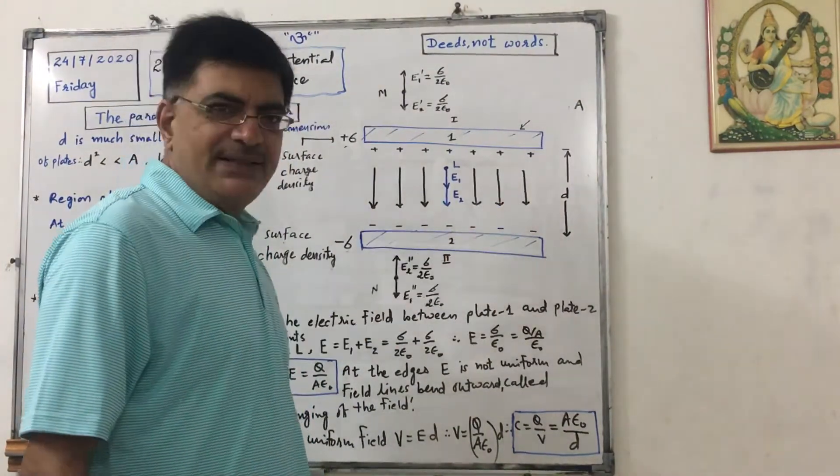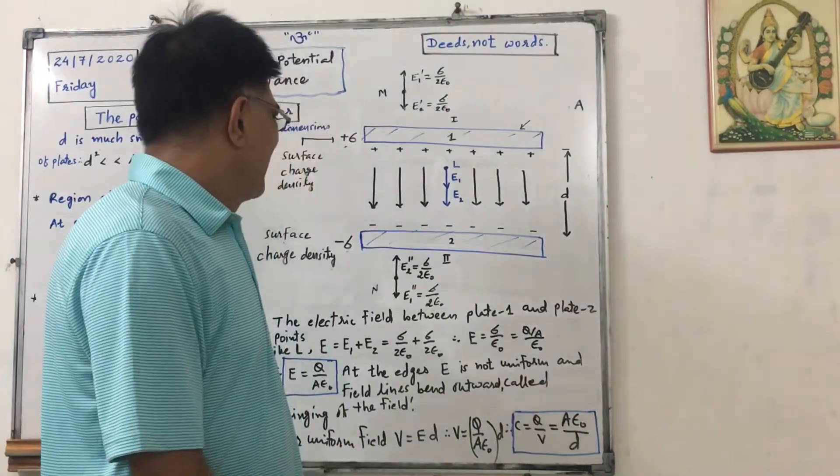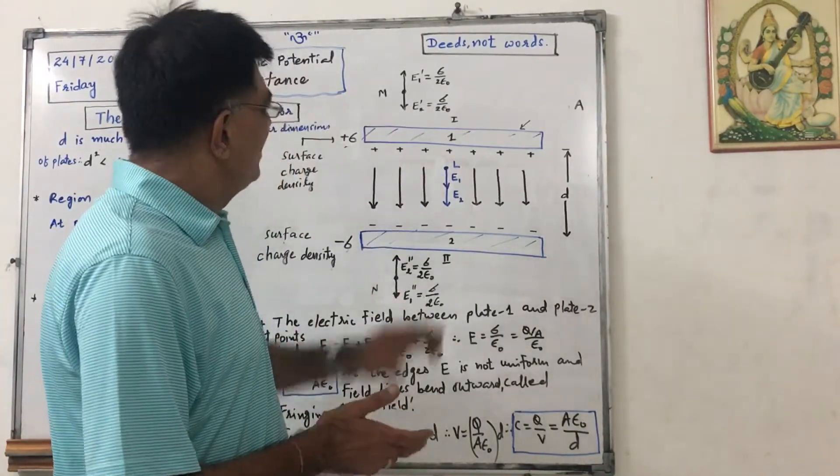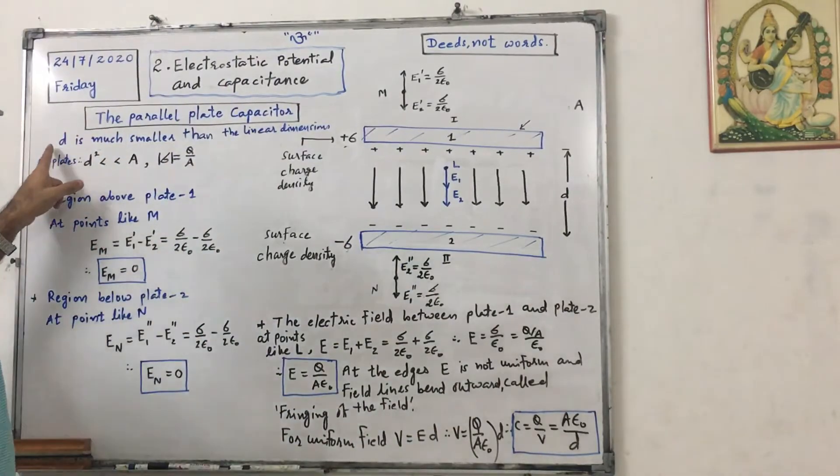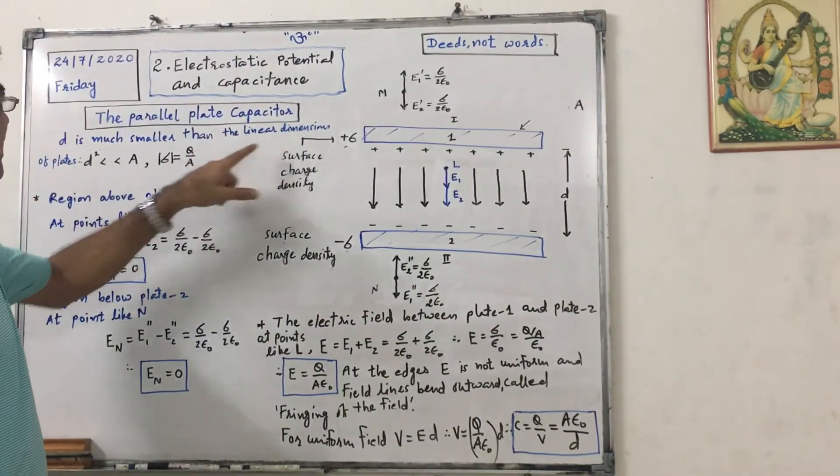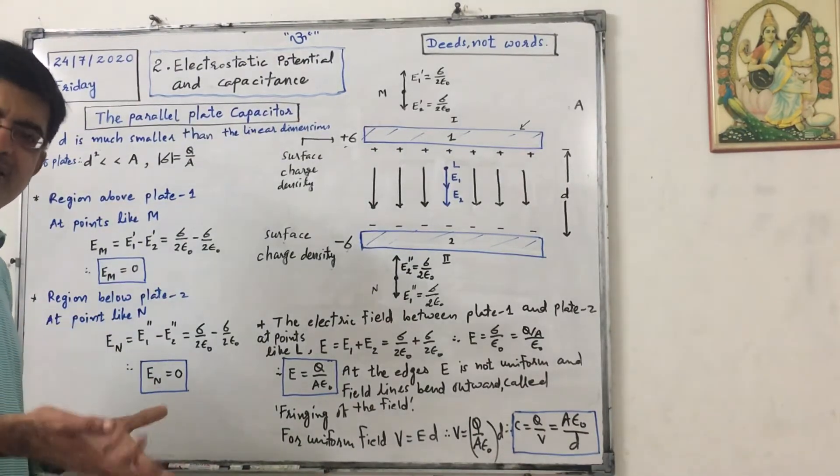I have drawn some field lines for uniform electric field, they are parallel. So this is the figure, this will be dispersed afterwards. So I have written here, d is much smaller than the linear dimensions of plates. So if d is much smaller, then d square will be negligible.